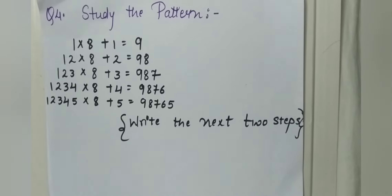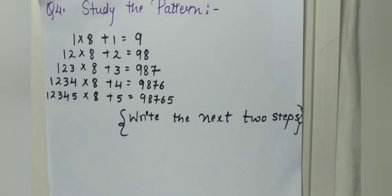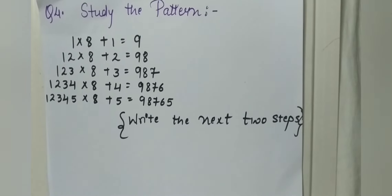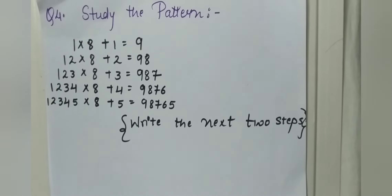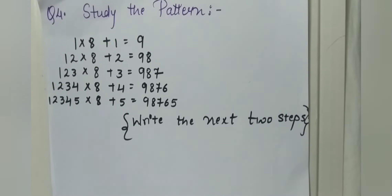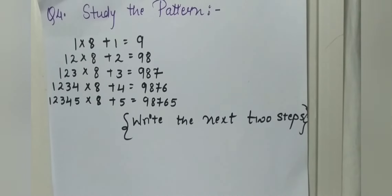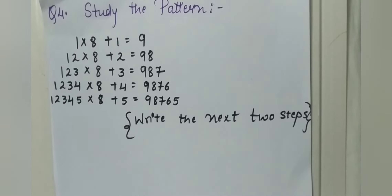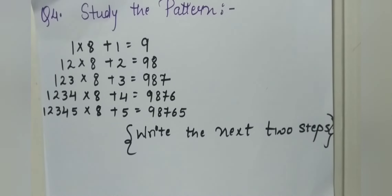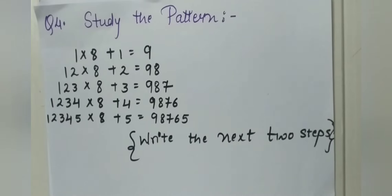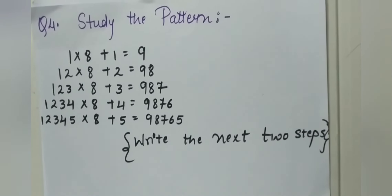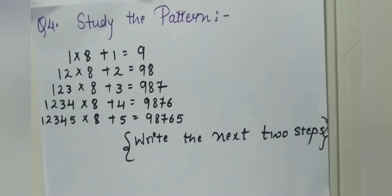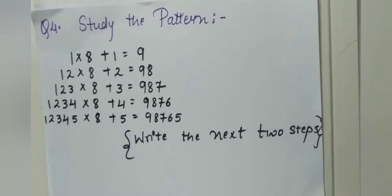Now we'll see the pattern-based question, which is the last question of the chapter. We have to study the pattern and write the next two steps. In the given pattern: 1 × 8 + 1 = 9; 12 × 8 + 2 = 98; 123 × 8 + 3 = 987; 1234 × 8 + 4 = 9876; 12345 × 8 + 5 = 98765. This pattern up to 5 is given, and we have to write 2 more steps.